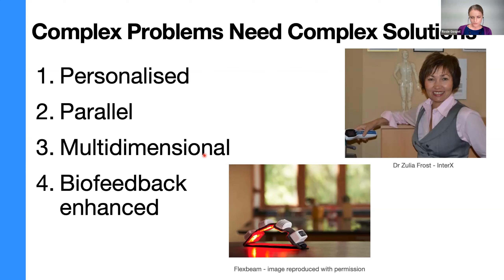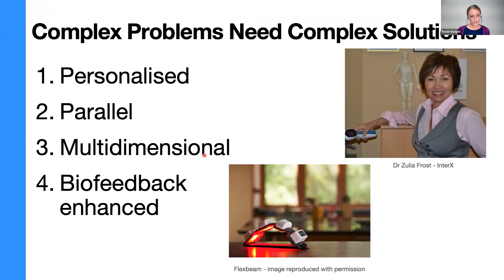Three: multi-dimensional — not just focusing on the biology of a person but other dimensions such as psychological, social, environmental, and mental, which admittedly can all change us at a molecular level. Four: biofeedback enhanced. He used the example of biofeedback-enhanced meditation for pain, but I was thinking InterX is another good example. Not only does it take readings of the body at various points, but my favorite is vagal nerve stimulation — you can ask the patient to observe how it feels when their autonomic nervous system is down-regulating.